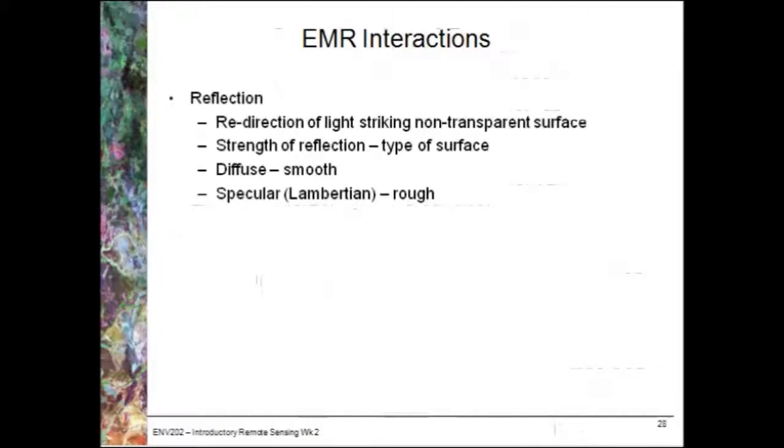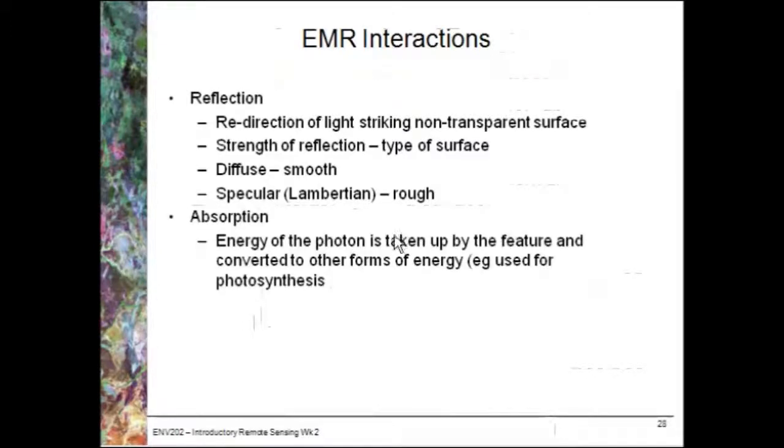So some terminology. Individual electromagnetic radiation interactions. First of all, reflection. By definition, this is the redirection of light striking a non-transparent surface. This can be from a range of diffuse reflection to specular. We'll come back to this in a moment as well.